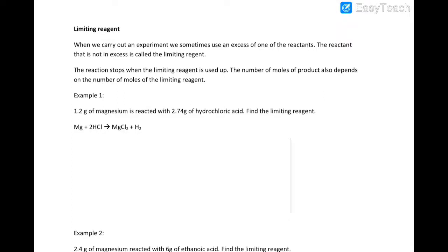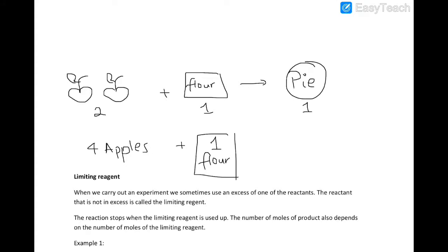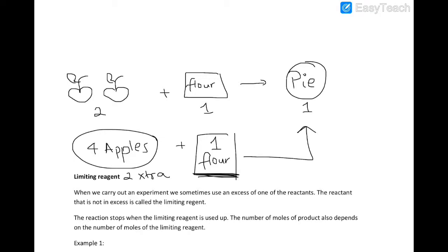Let's recap the concept of limiting reagent. To make one pie, we need two apples and one pack of flour. If we have four apples and one pack of flour, we can still only make one pie, which means we have two extra apples. The apples are in excess, and the flour is limiting the number of pies we can make.